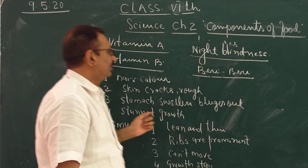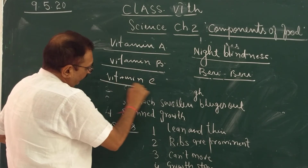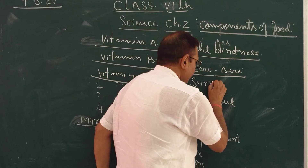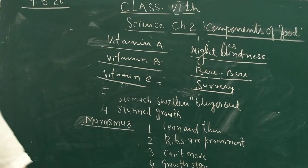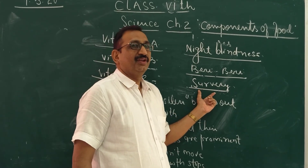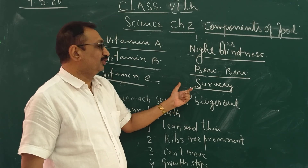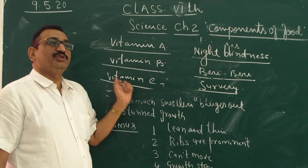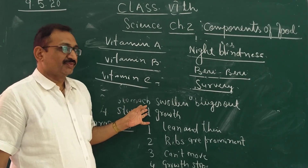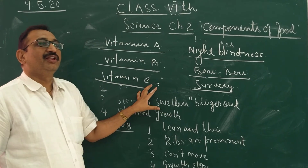And today's final topic is the disease due to the lack of vitamin C. This disease's name is scurvy. To overcome this problem, we can use citrus fruits — like amla, orange, lemon, and many more. By using these, we can fulfill the requirement of vitamin C.